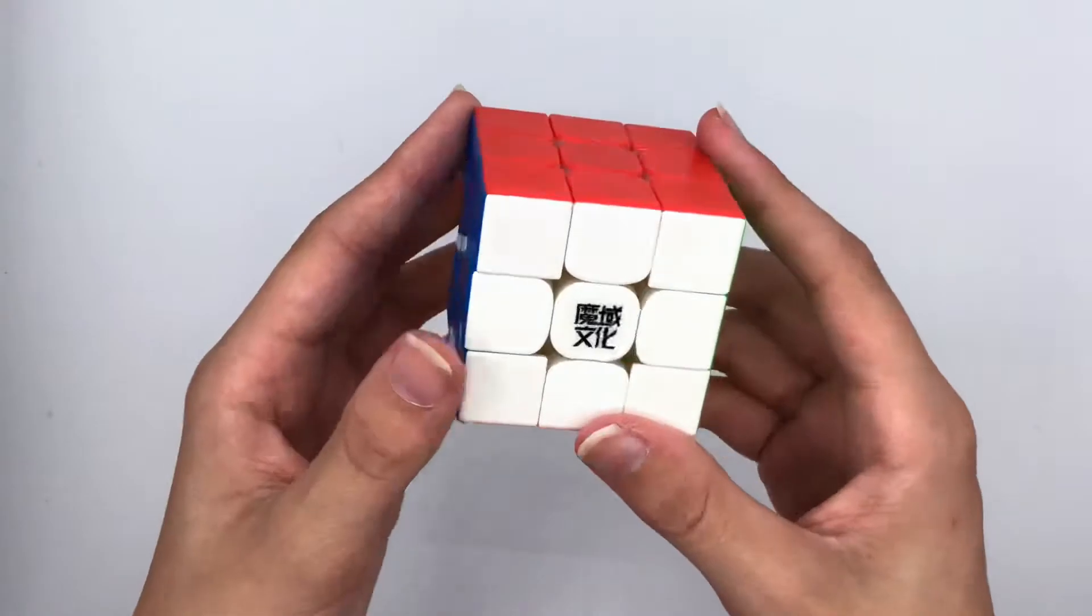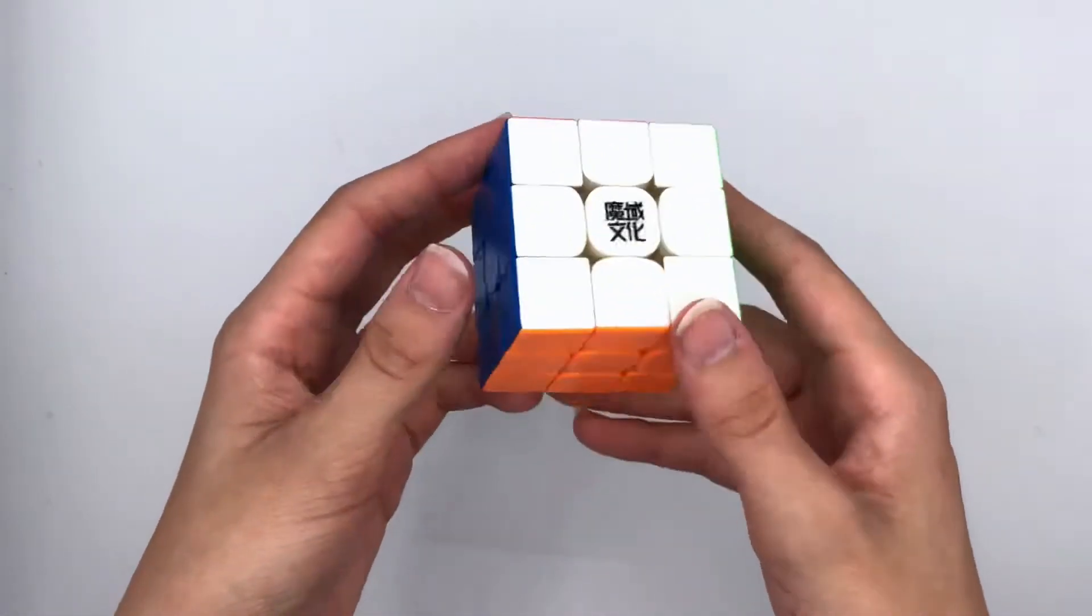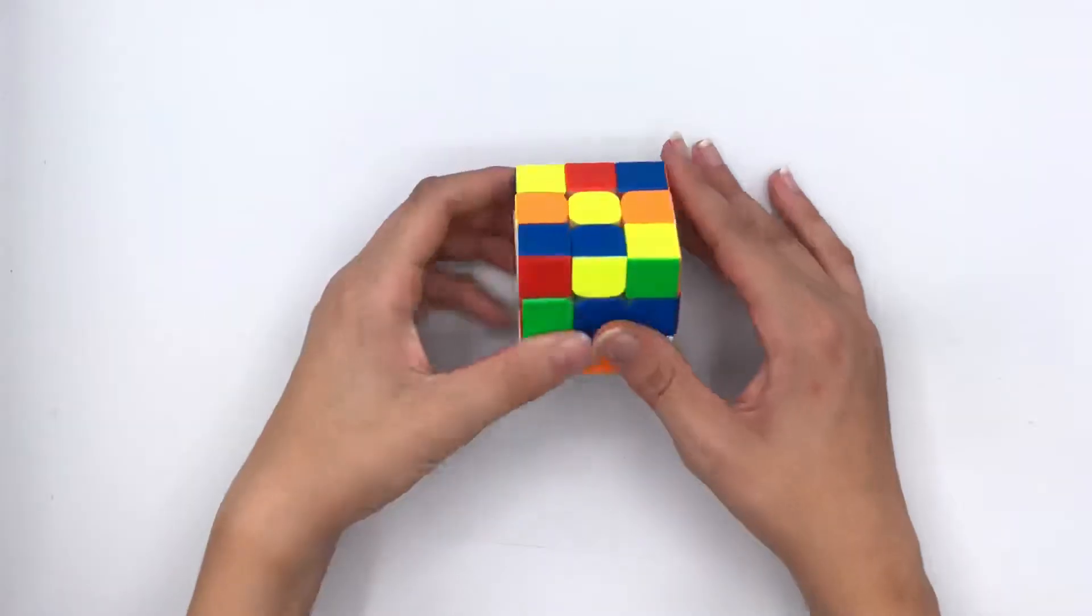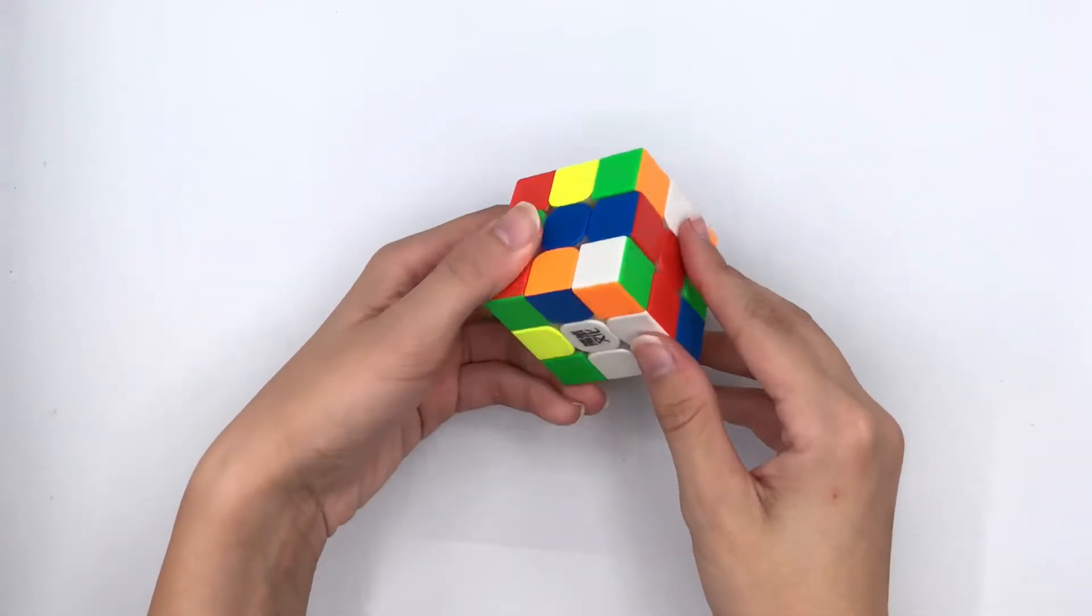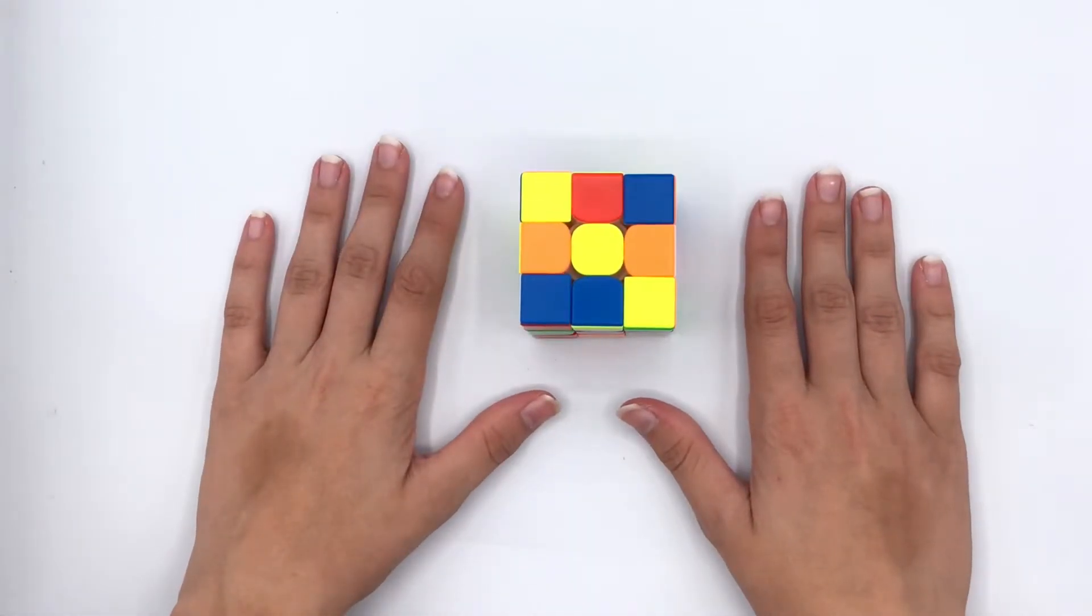So now I'm going to go ahead and try doing a speed solve with it. All right and so the cube is all scrambled up, so let's go ahead and try solving it. In three, two, one, go.